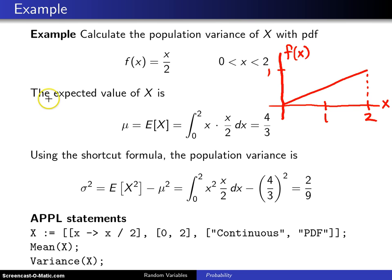In an earlier exercise we calculated the expected value of x, which is mu, the expected value of x. That is the integral over the support from 0 to 2 of x multiplied by the probability density function x over 2 dx.